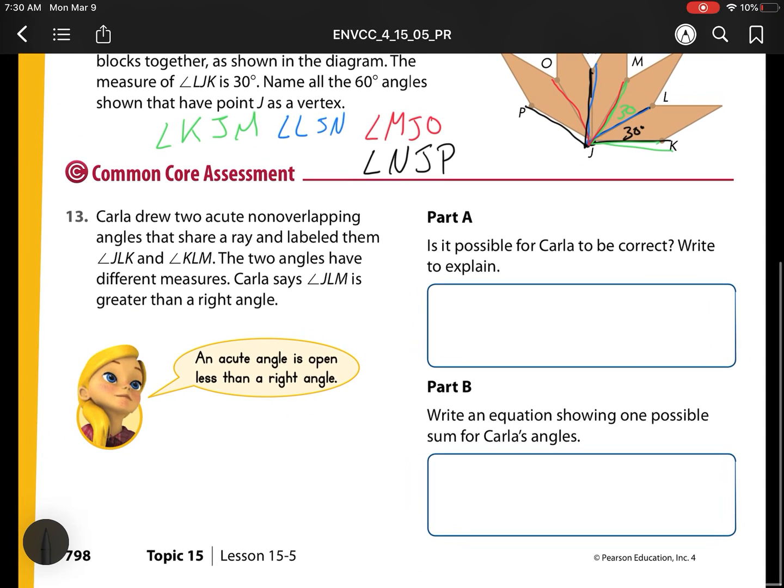Our very last problem, number 13. Carla drew two acute, so two small, non-overlapping angles that share a ray and labeled them JLK and KLM. The two angles have different measures. Carla says angle JLM is greater than a right angle. So is it possible for Carla to be correct? Let's see.